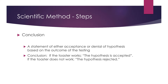If the toaster toasts bread you come to the conclusion. The conclusion is a statement as to whether you are going to accept or deny the hypothesis based on the outcome of your experiment. If the toaster works, your conclusion is: I accept my hypothesis — the outlet I had it plugged into didn't work. If the toaster did not toast the bread, then you would reject your hypothesis and try another one.